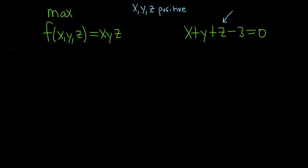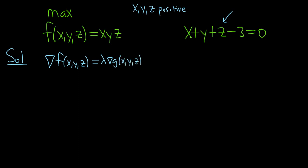To do this problem, we're going to use something called Lagrange multipliers. The method of Lagrange multipliers says that we start by solving the following equation: the gradient of f(x, y, z) is equal to lambda times the gradient of g(x, y, z). And also we have the following constraint: g(x, y, z) is equal to a constant.